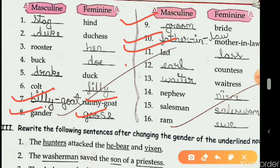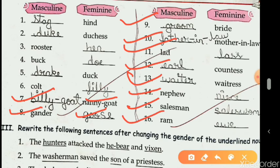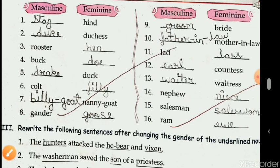Earl — countess. Waiter — waitress. Nephew — niece. Salesman — saleswoman. Ram — ewe. Please learn all these pairs.